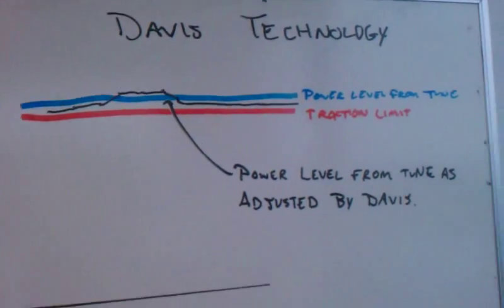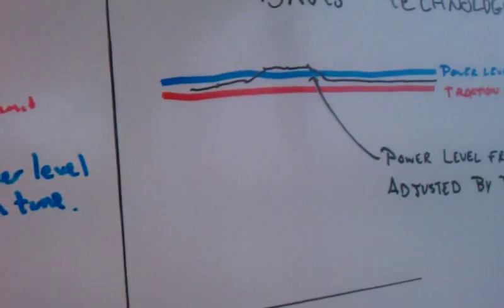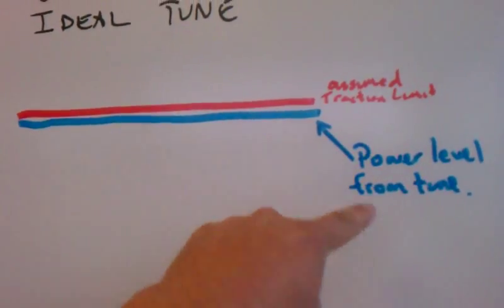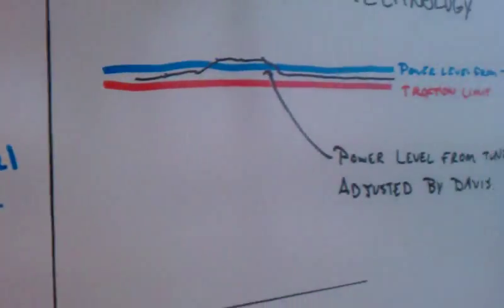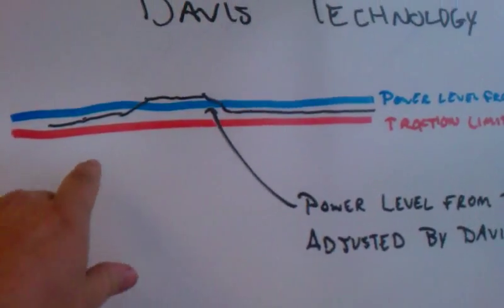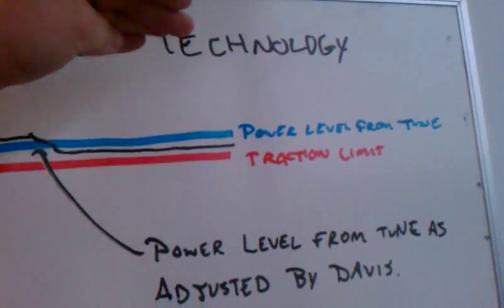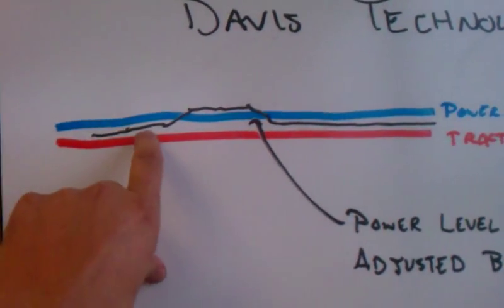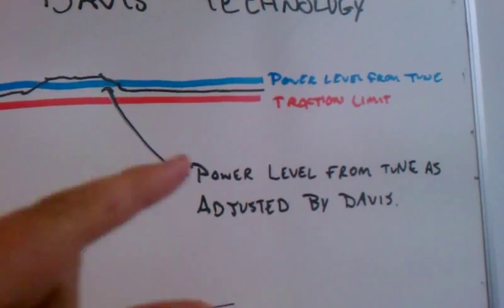What the Davis box allows you to do is be more aggressive with your tune. You've got what the track will hold, you've got your tune up, you always got to be below that. What I have personally done with the Davis stuff is gotten more aggressive. I've taken my power level and gone over what I think the track will hold. In this case I've drawn a black line here that shows how the Davis box can adjust your power level as traction events happen.